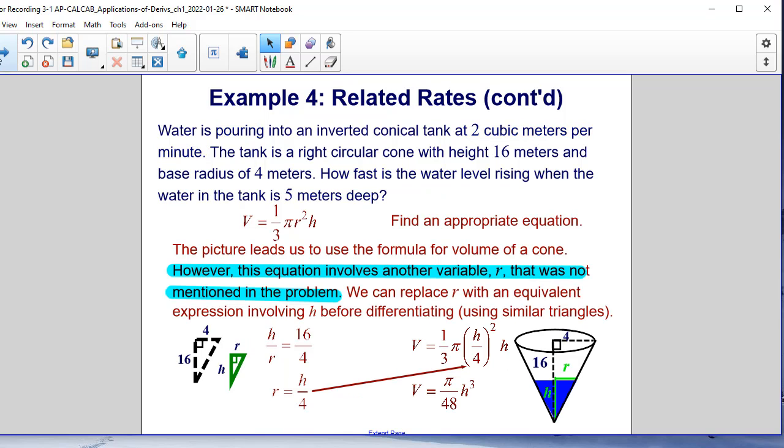Now there's a little glitch or a small problem. Our equation is V equals 1/3 πr²h. But nothing about the radius is mentioned as far as the problem goes. So we're going to need to do a little bit of work to rewrite this in terms of h only.